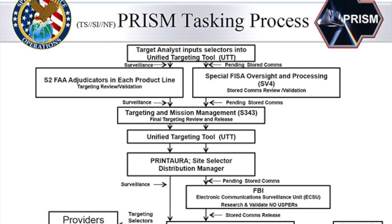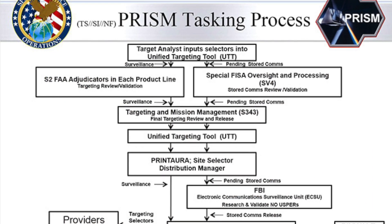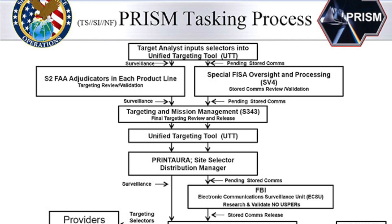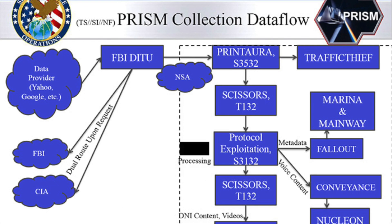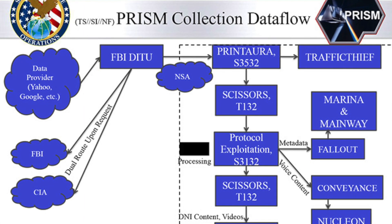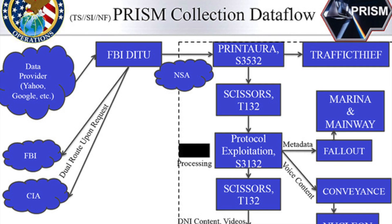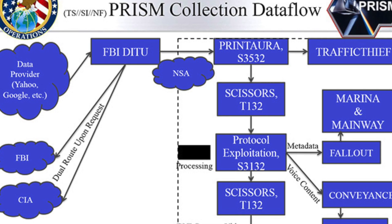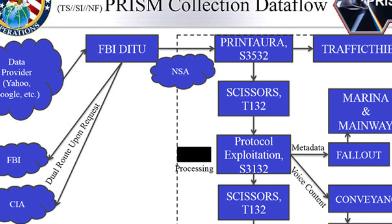The leaked document contains a slide that records the date each company allegedly joined PRISM. Another showed the type of data collected, which included email, chat messages, videos, photos, file transfers, and more.